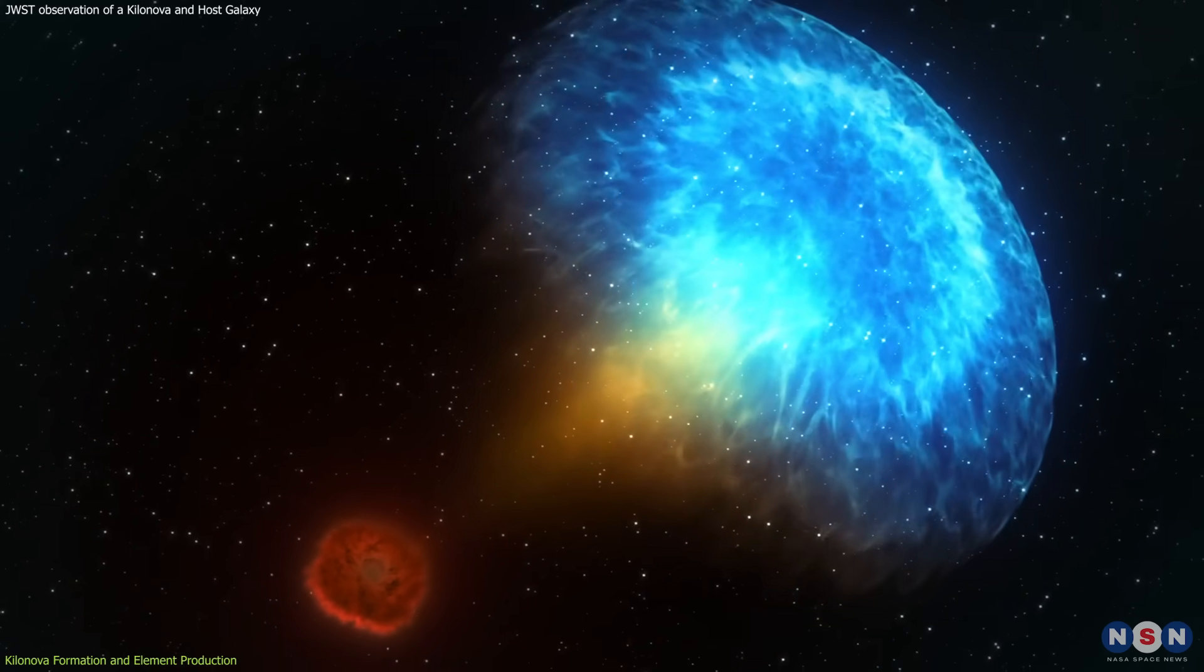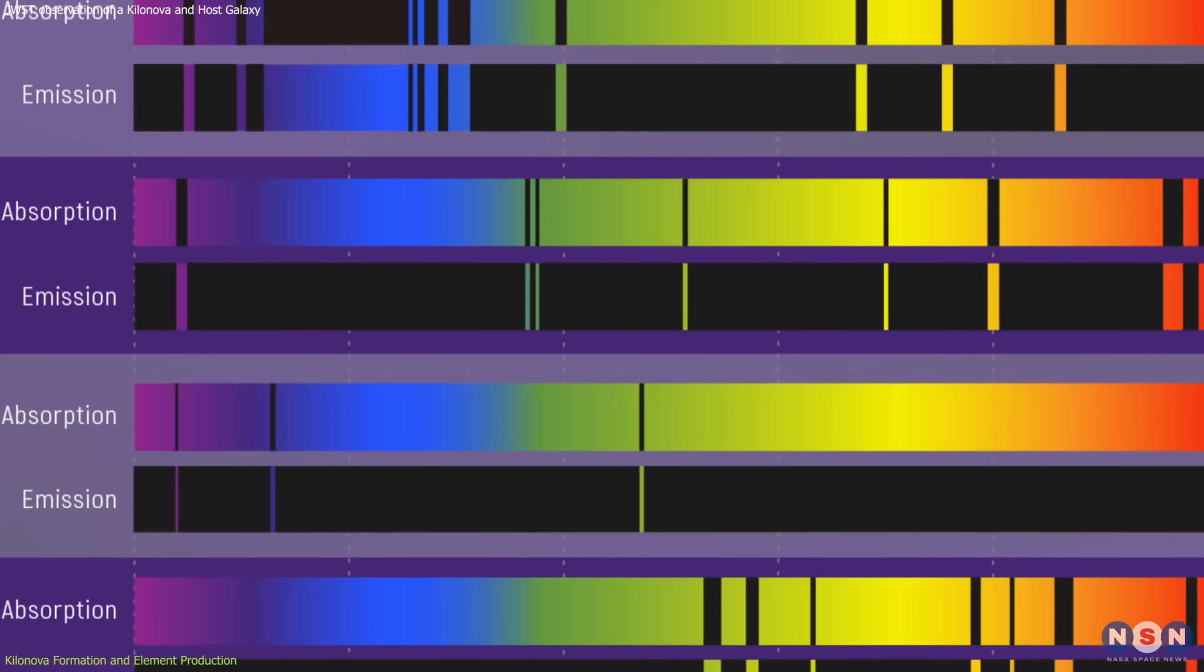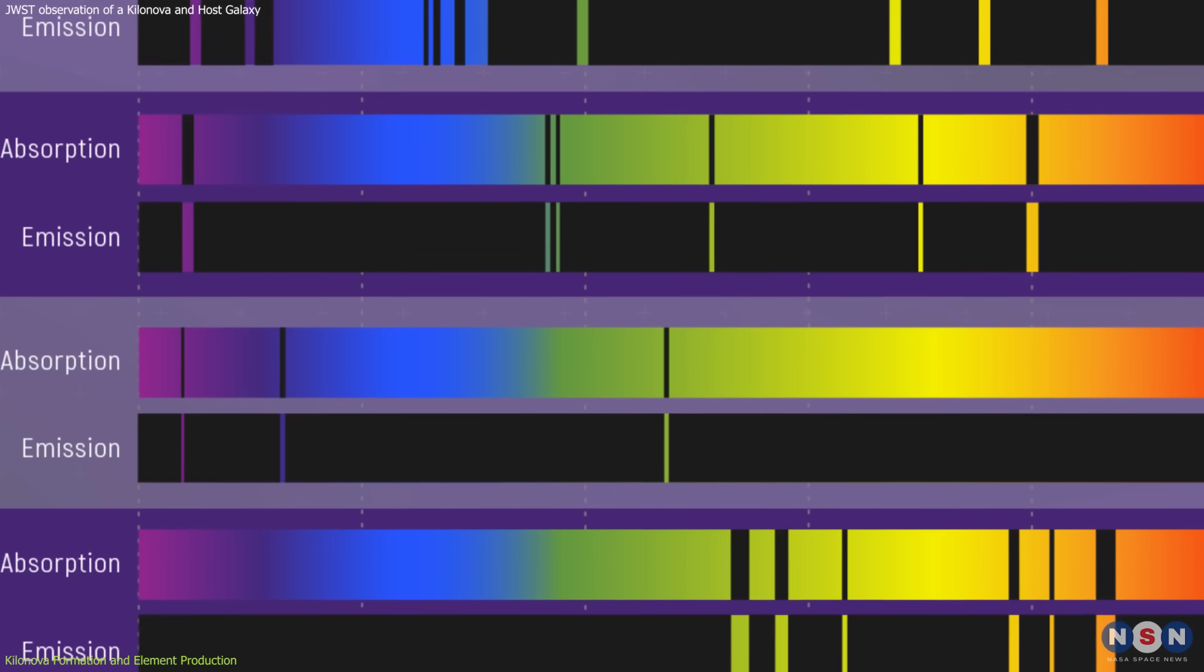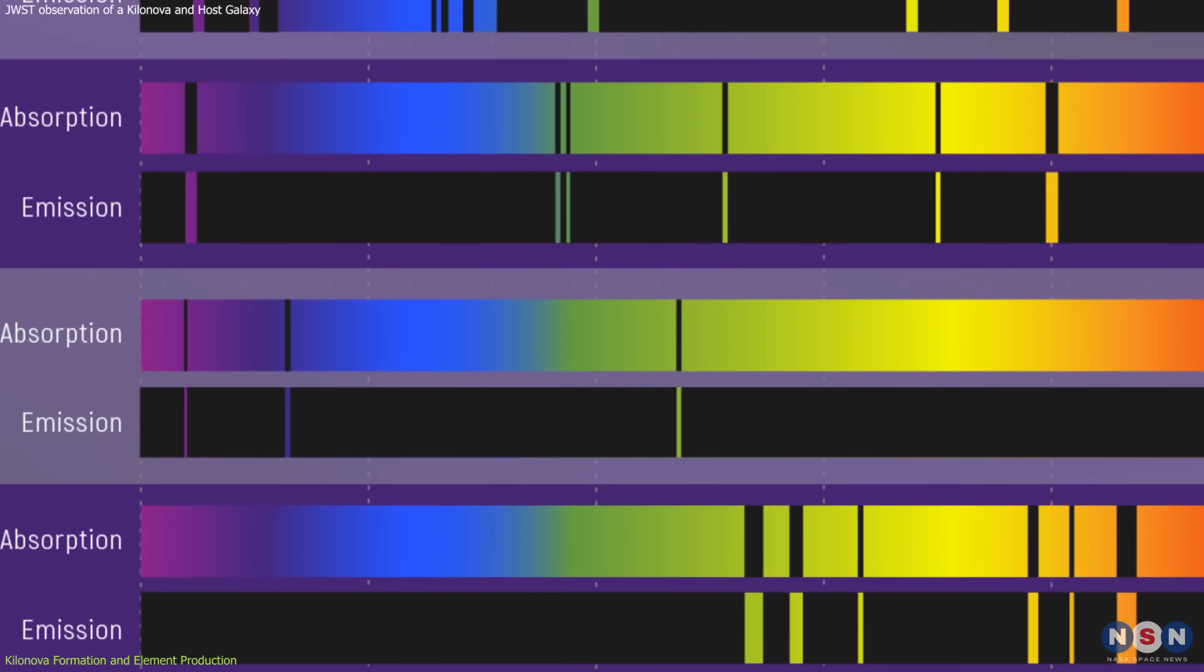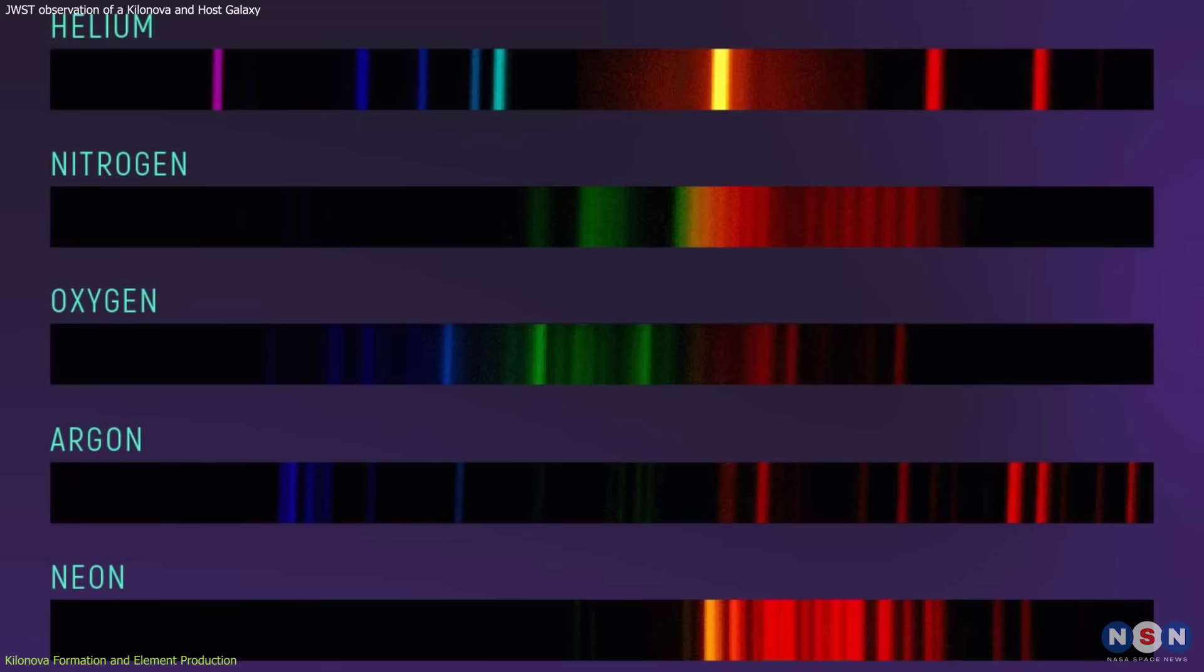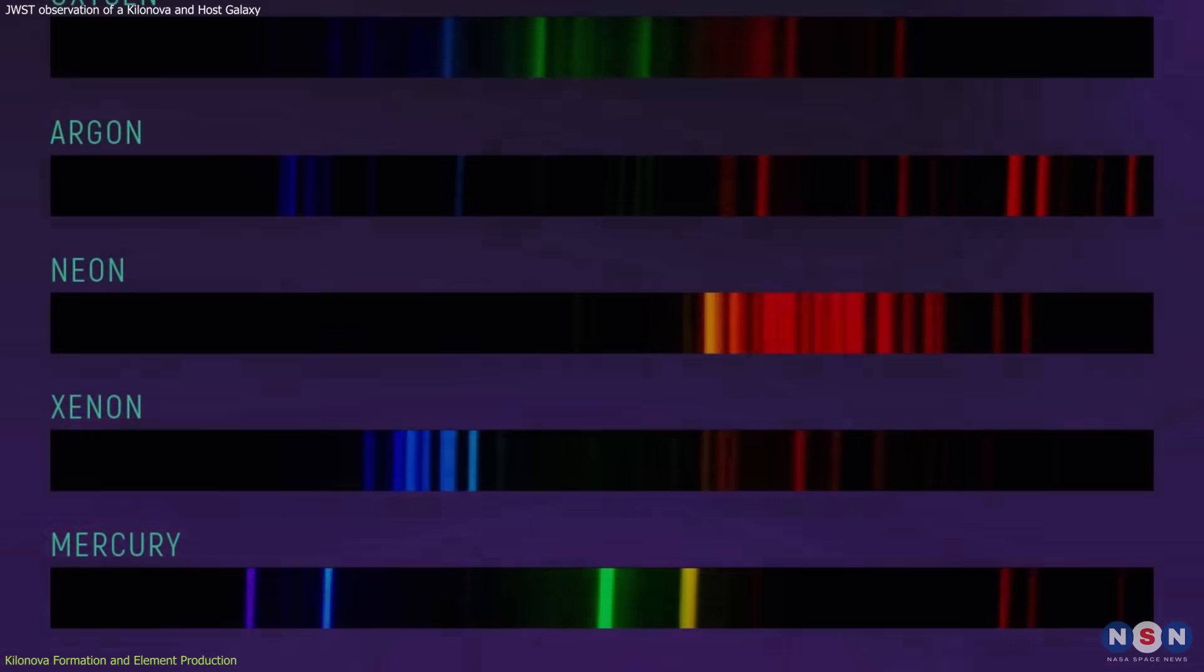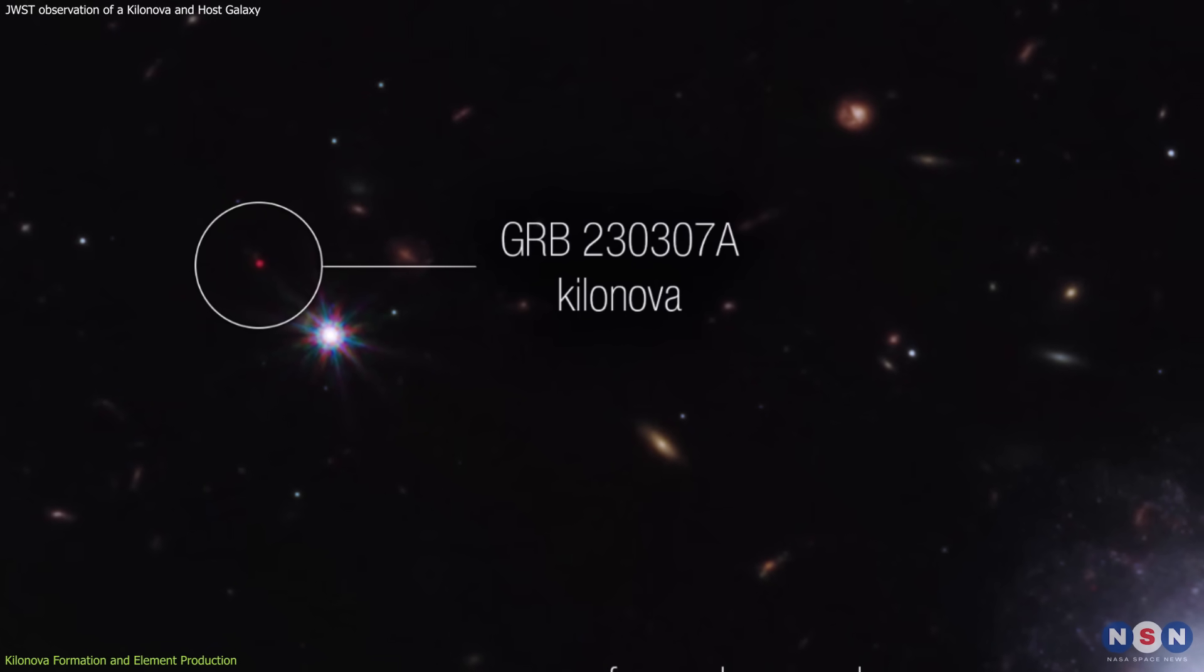But how do we know that these elements are present in the kilonova? Well, we can use their spectral signatures, which is a graph that shows how much light an object emits or absorbs at different wavelengths. Each element has a unique spectrum that acts like a fingerprint, allowing us to identify it.